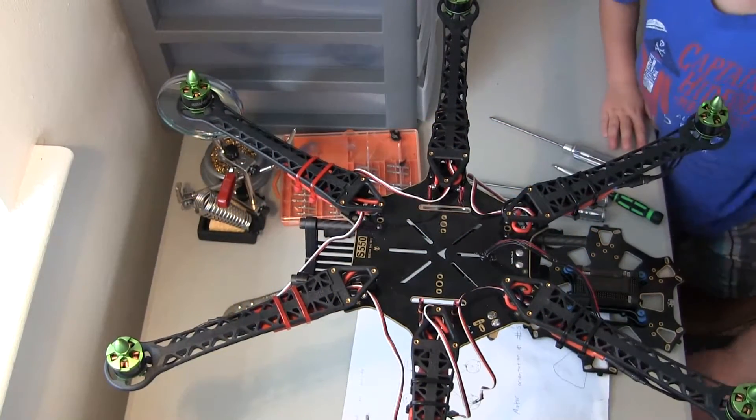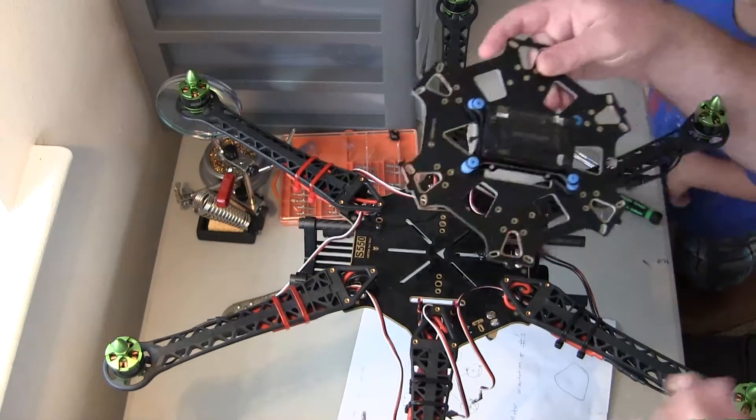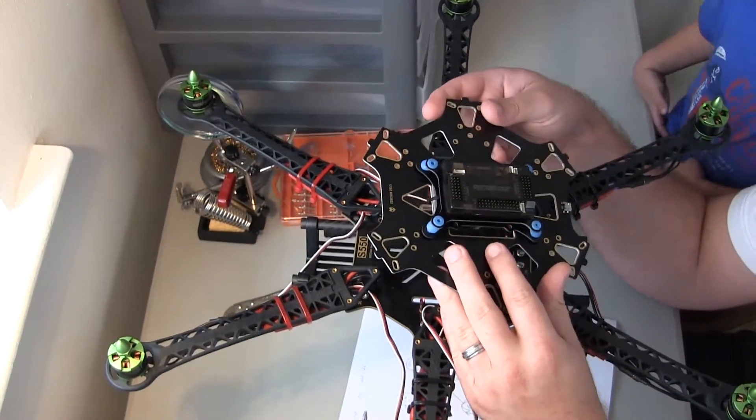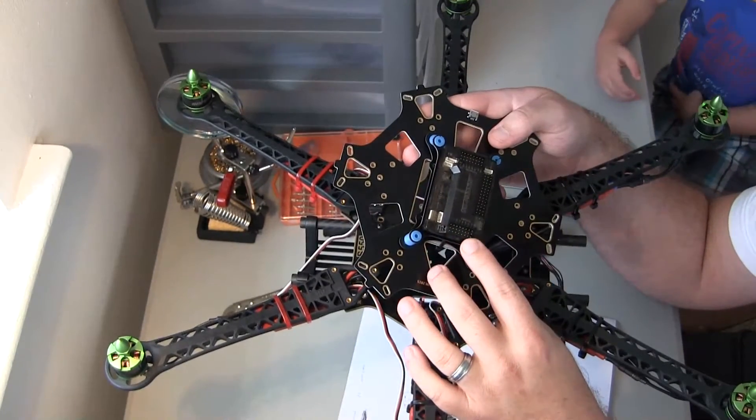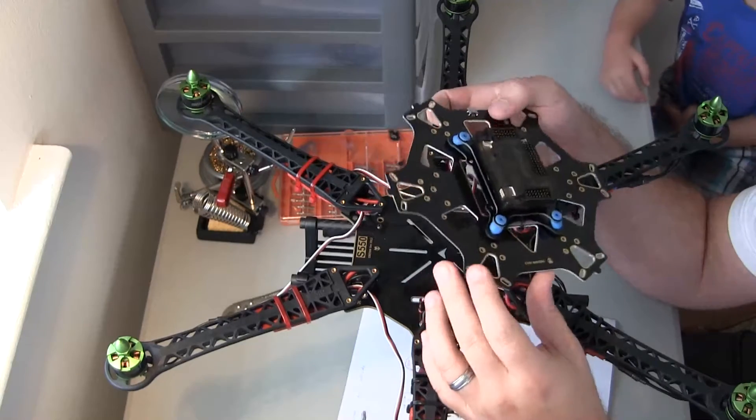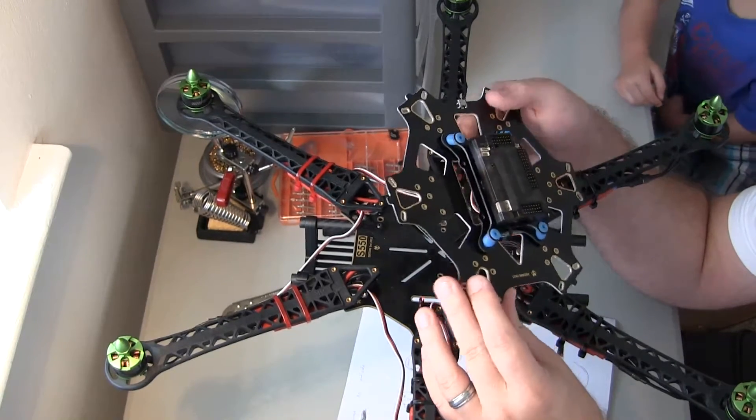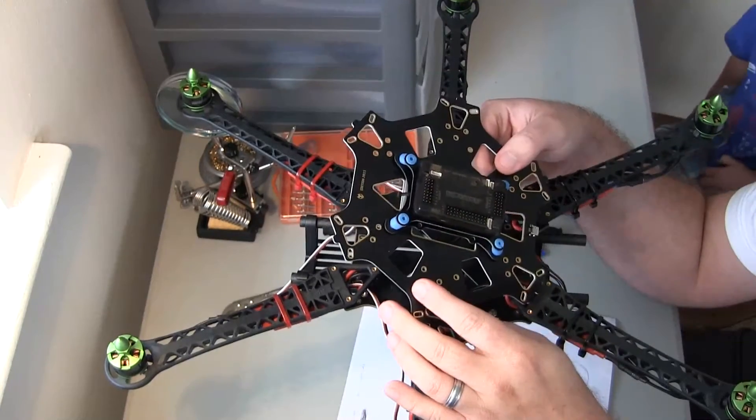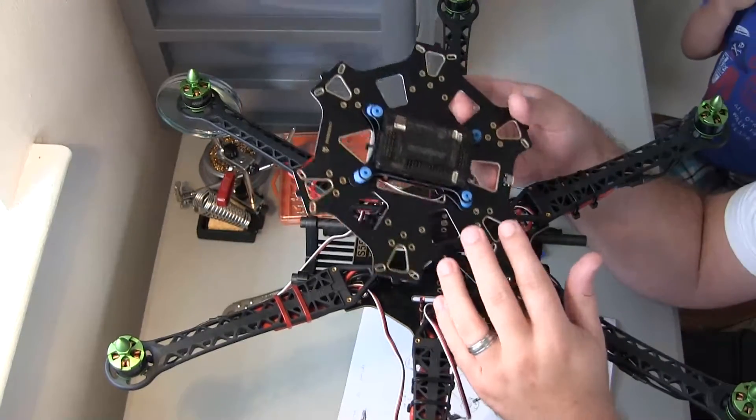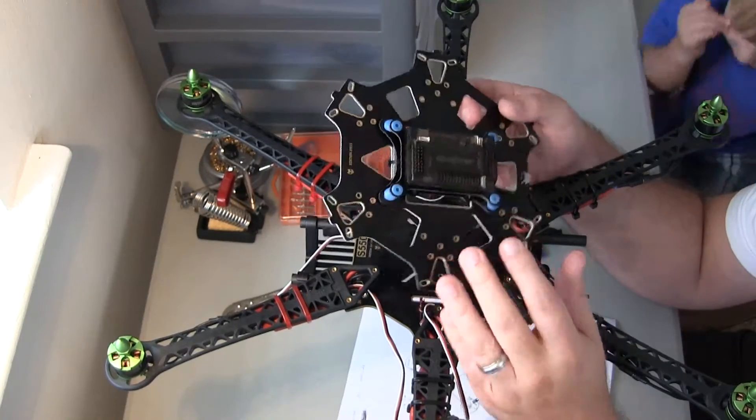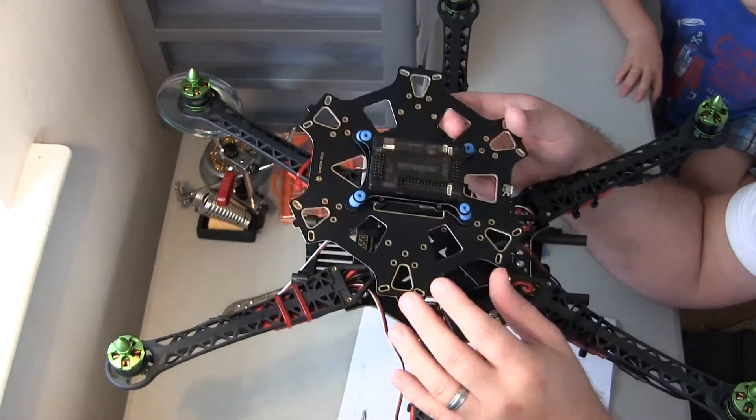So next thing we're going to do is figure out where these plug in on the outputs on the APM 2.6. They're numbered 1 2 3 4 5 6 7 8. Sorry about the outputs. The ESCs are going to be going into the outputs. The inputs are for the receiver to this which I don't have the receiver yet.